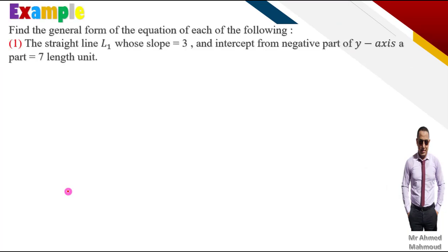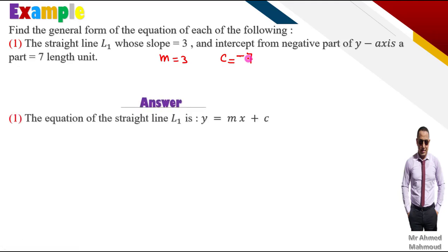هناخد إكزامبل هنا: find the general form of the equation of each of the following cases. Number one بيقول: straight line whose slope equals three, يعني m = 3، and the intercept from the negative part of y-axis equals 7، يعني c = -7. الـ equation هنا: y = mx + c، فهنعمل replacement: three in place of m و negative seven in place of c، فهتبقى y = 3x - 7.